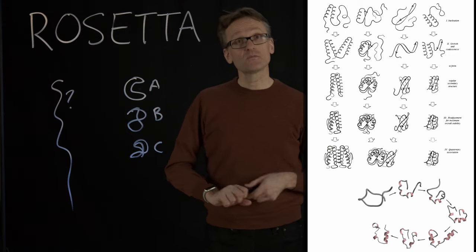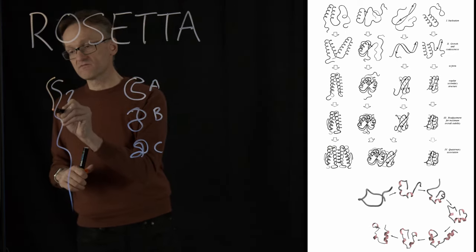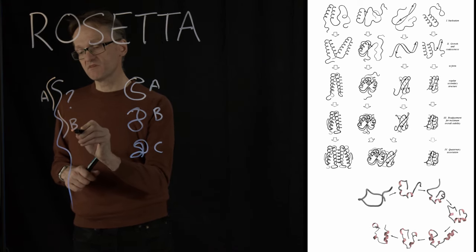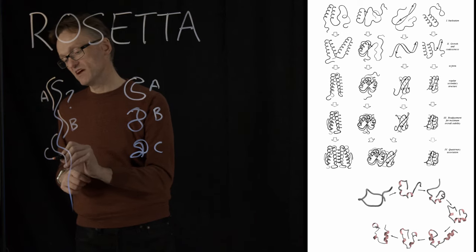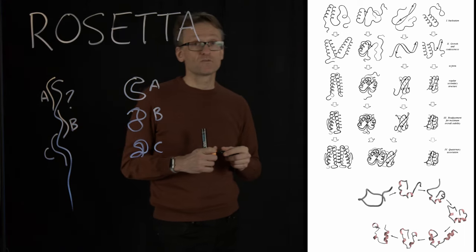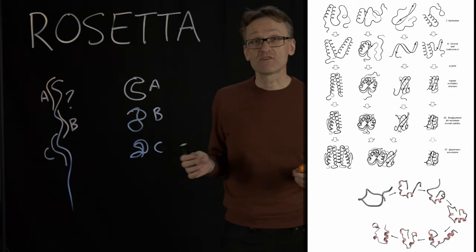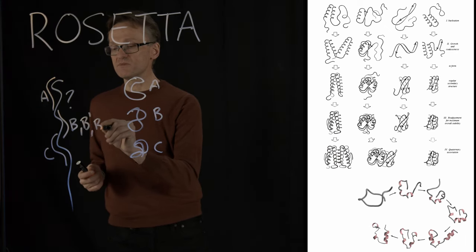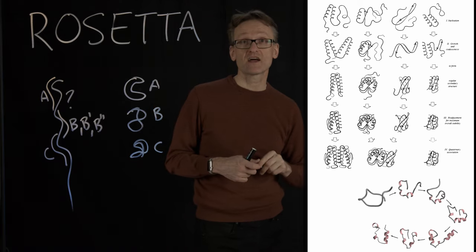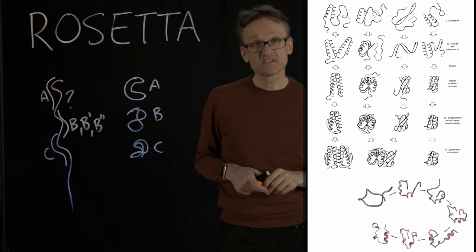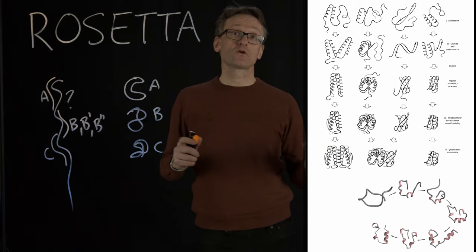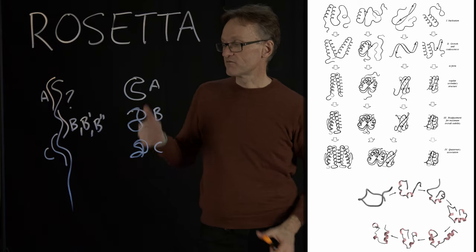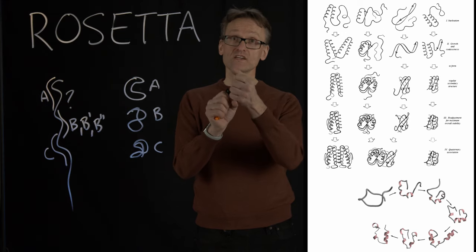You pick fragment A for the first part, fragment B for the second part, then fragment C, and so on. The problem is there won't be just one fragment for each part — there will be fragments B, B-prime, and many others. You have to combine many, many fragments, so this ends up being a fairly large search problem, trying to combine different fragments together.